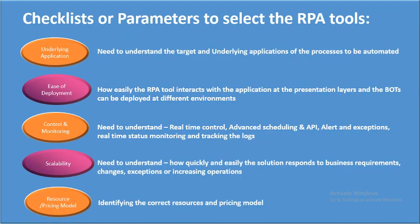Now, what is the checklist of parameters to select an RPA tool? It's very important to understand these factors before choosing. First, you should understand the type of applications involved in your particular project — the target and underlying applications of the processes to be automated. Second is ease of deployment: how easily the RPA tools interact with those applications at the presentation layer and how easily you can deploy the bot in different environments.